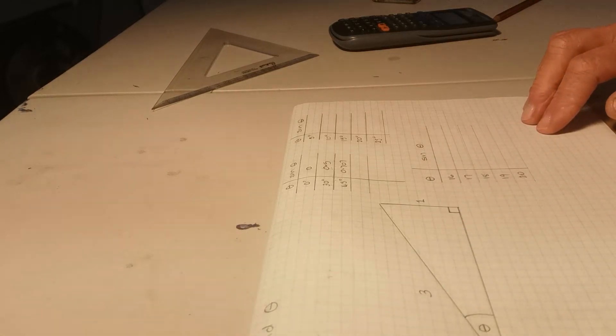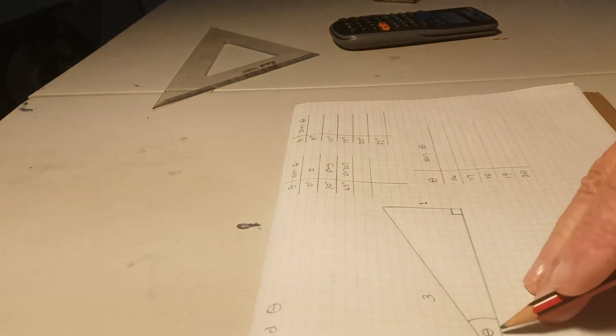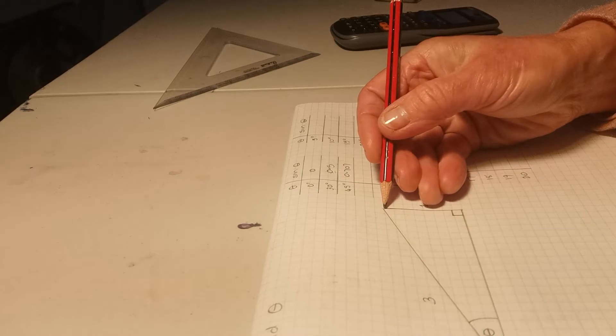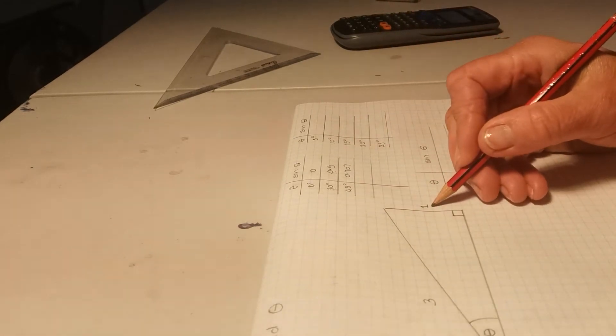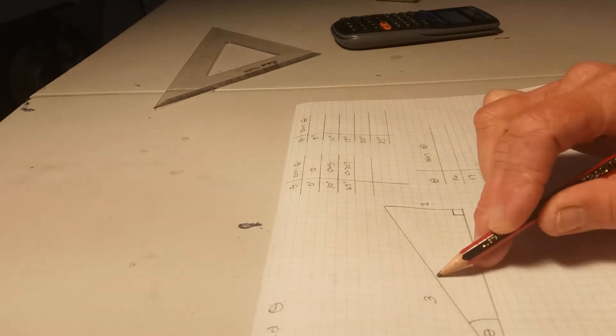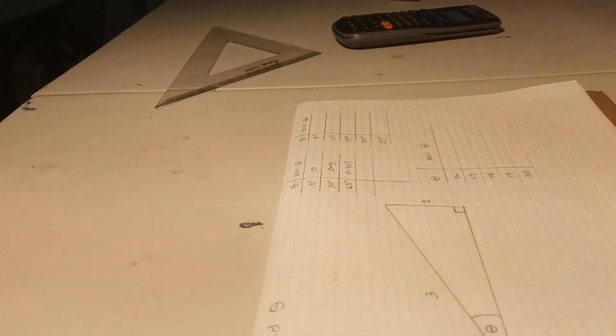Hi, this is Claire, and this is an activity we're going to do to estimate the value of theta in this triangle, which has the height of 1 on the opposite side, and the hypotenuse length is 3, and we want to estimate the value of theta.